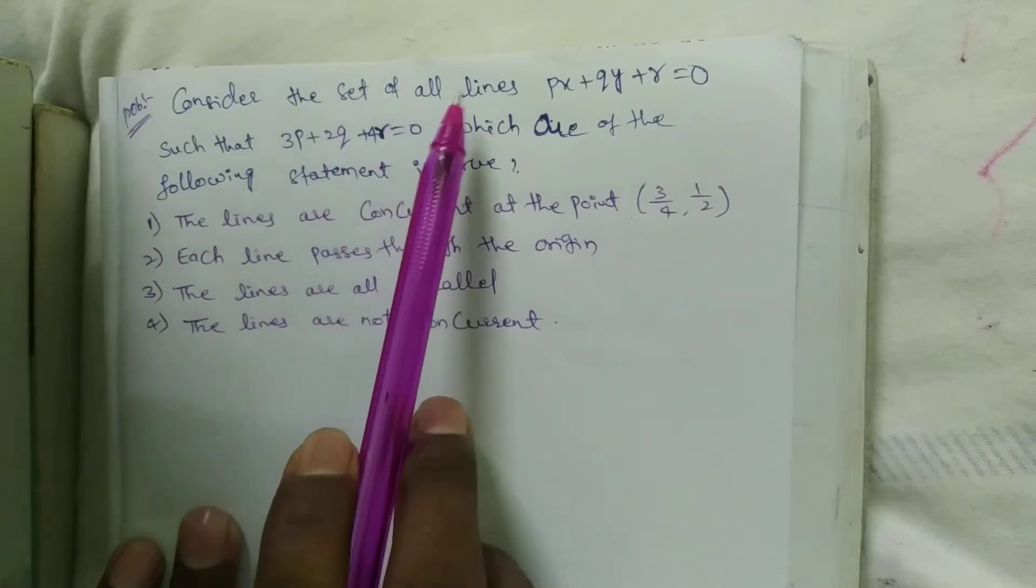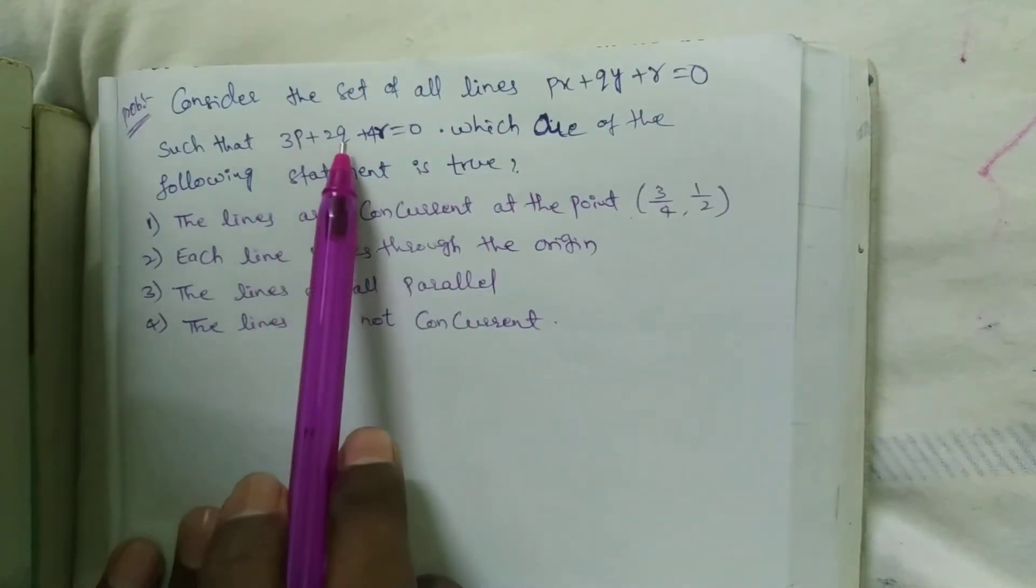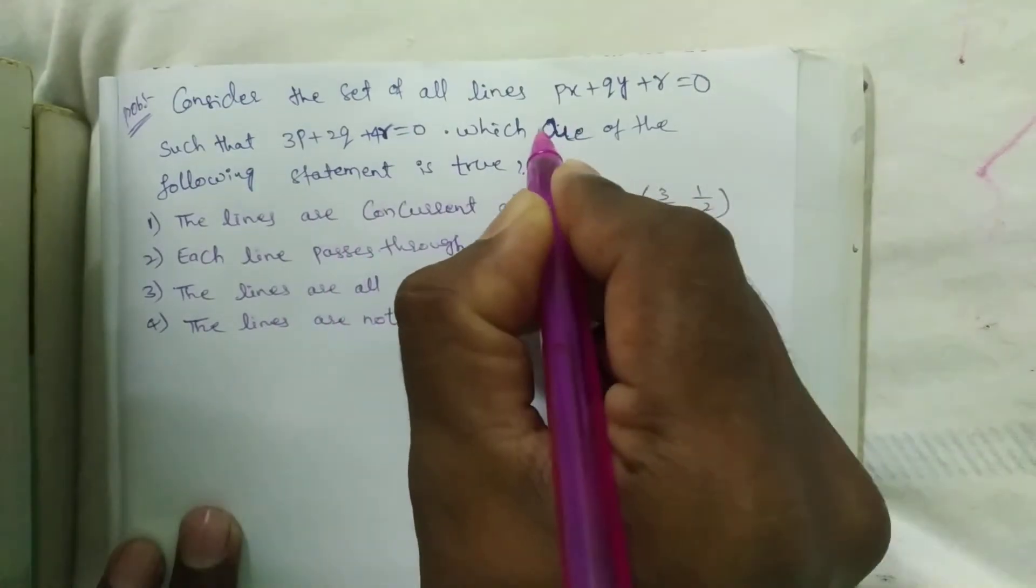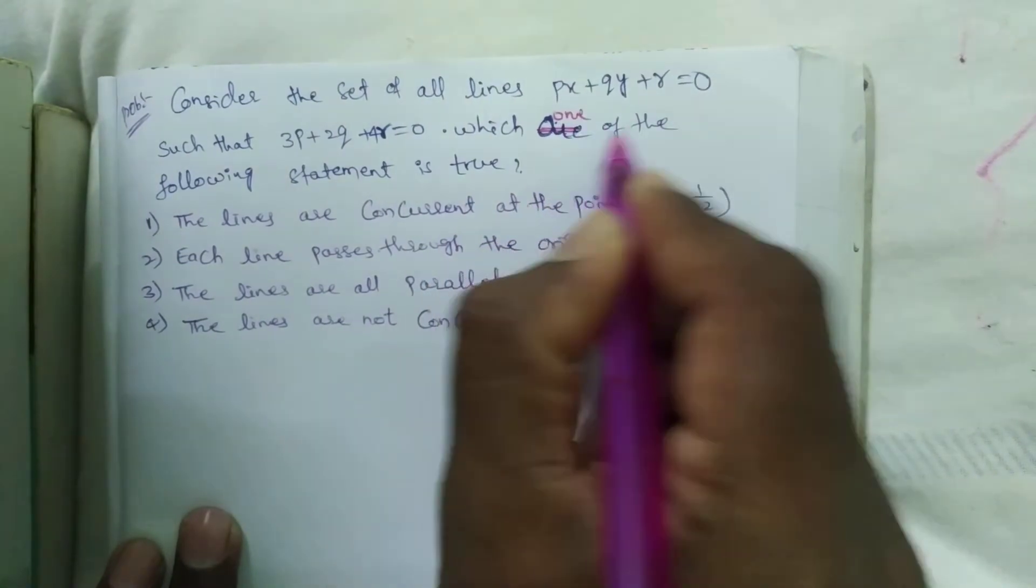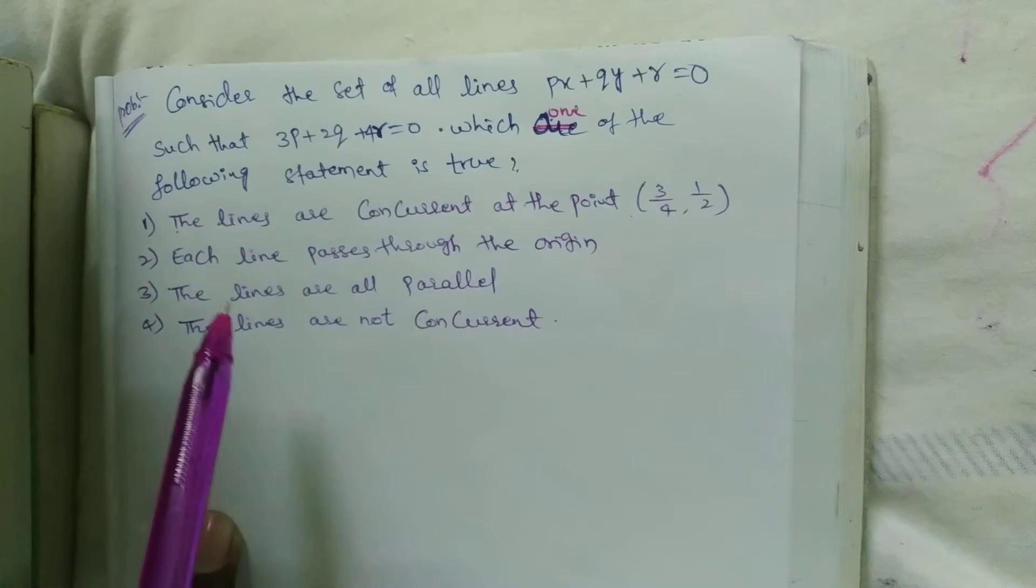Consider the set of all lines px plus qy plus r equal to 0 such that 3p plus 2q plus 4r equal to 0. Which one of the following statement is true? Write these four options here.